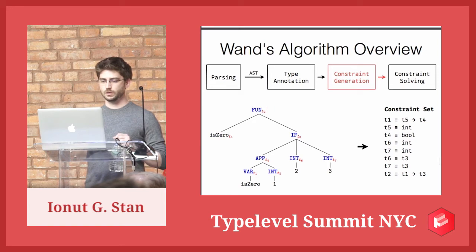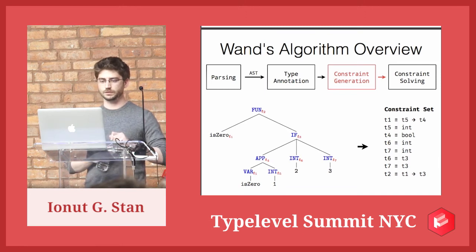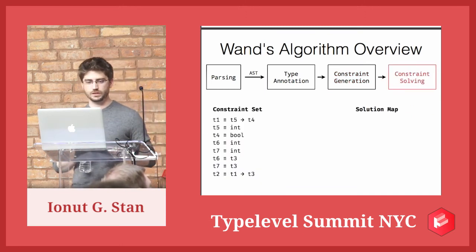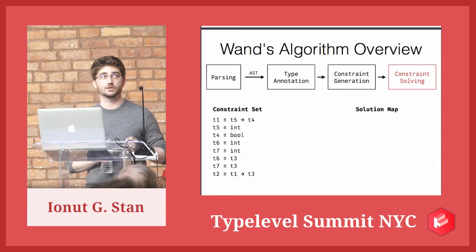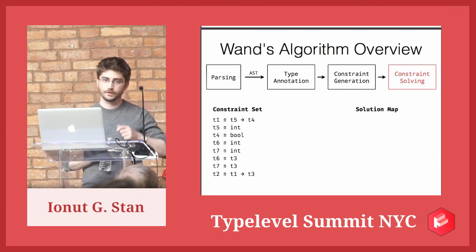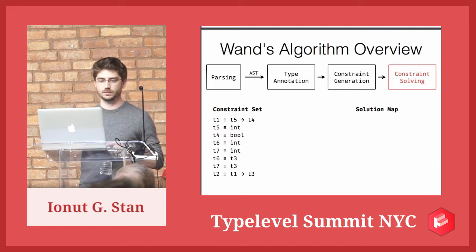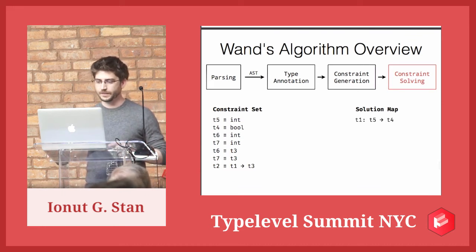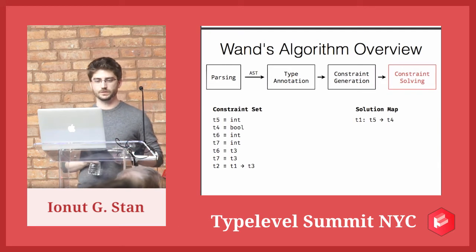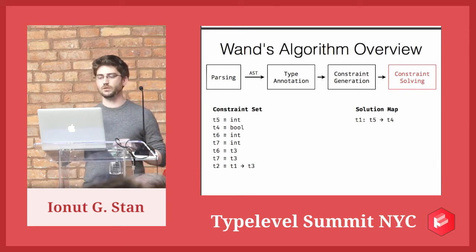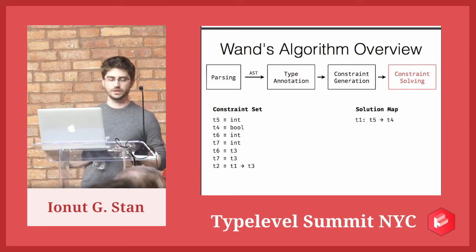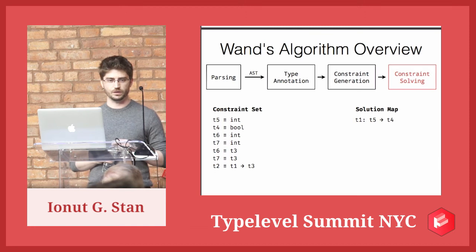This is the constraint set produced by the second phase, the constraint generation, and now we need to solve it. This is solved using an algorithm called unification, and it looks a lot like solving systems of linear equations in algebra. You just have to replace some variables for others. For example, the first constraint says T1 must be a function from T5 to T4. So we say T1 is a solution — for this variable in the equation called T1, we have a solution, and that solution is T5 to T4 as a function.